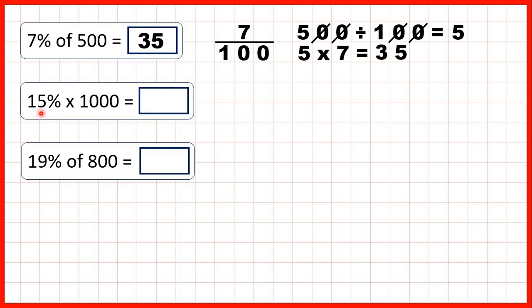Now we have 15% times 1000, but remember times and of mean the same thing, so we follow exactly the same method. 15% is 15 over 100, because percent means we have a denominator of 100. So first we can divide 1000 by the denominator, so divide 1000 by 100. That's 10.